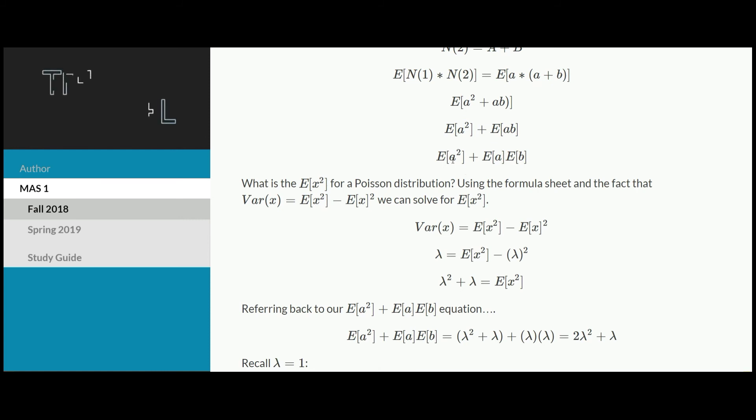At this point, we just need to know these three separate expectations, and then we'll be able to solve for the final answer. First, looking at this expected value of A squared, where A is the value from a Poisson distribution, what we can do is reference our variance formula. That variance of X equals the expected value of X squared minus the expected value of X squared. The reason we do this is we can simply refer to our formula sheet.